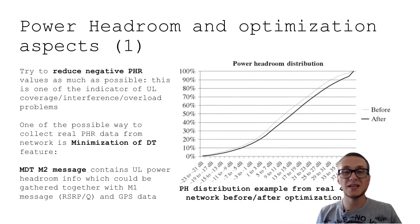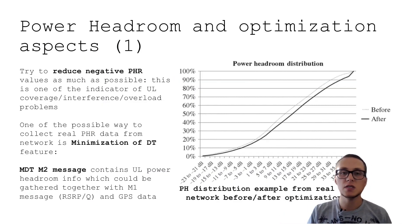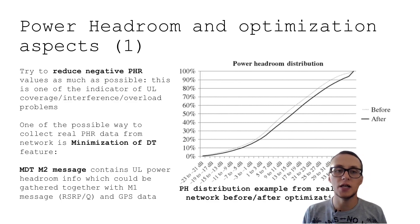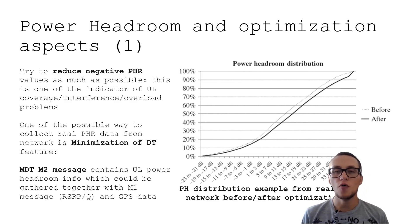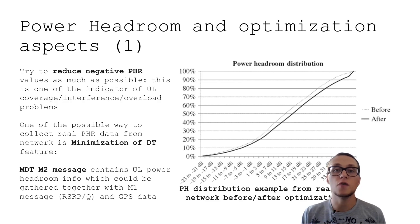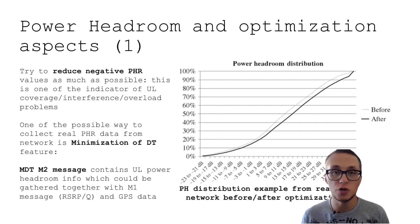Now let's briefly talk about some optimization aspects. It is obviously better to reduce negative values of power headroom as much as possible, because negative values are indicators of poor uplink coverage, interference, or overload problems. One possible way to collect power headroom values is not only from drive tests but also via the minimization of drive test (MDT) feature.